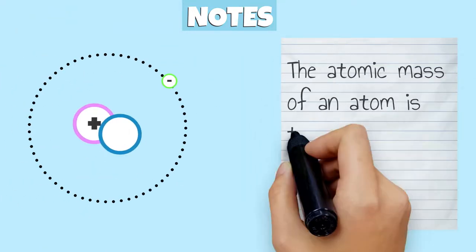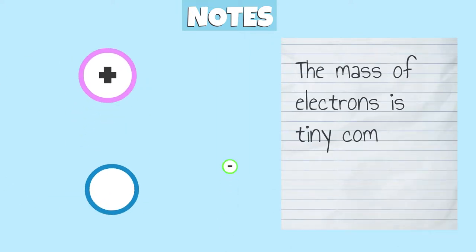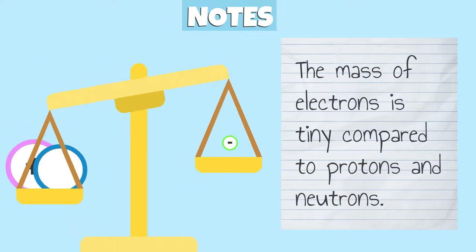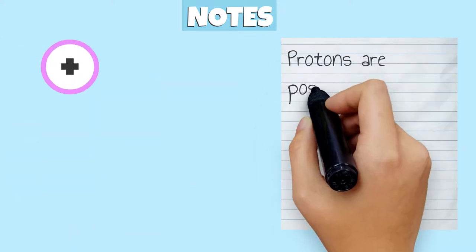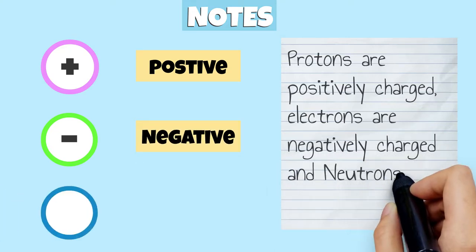The atomic mass of an atom is the sum of both protons and neutrons. The mass of electrons is tiny compared to protons and neutrons. Protons are positively charged, electrons are negatively charged, and neutrons have no charge.